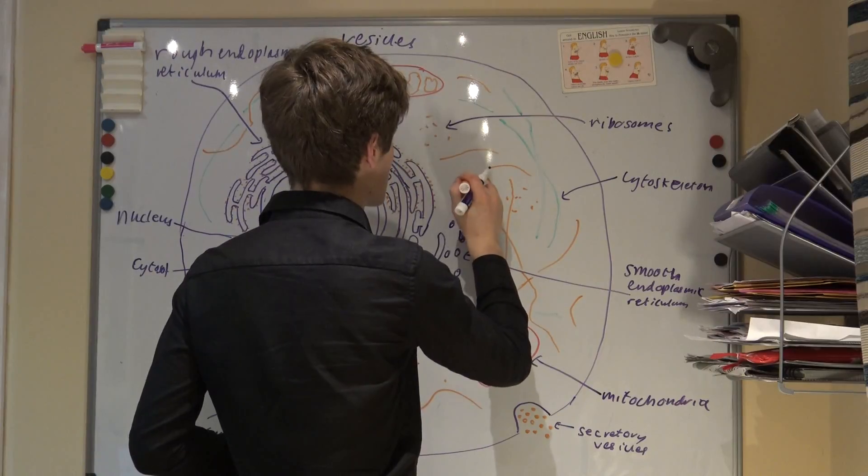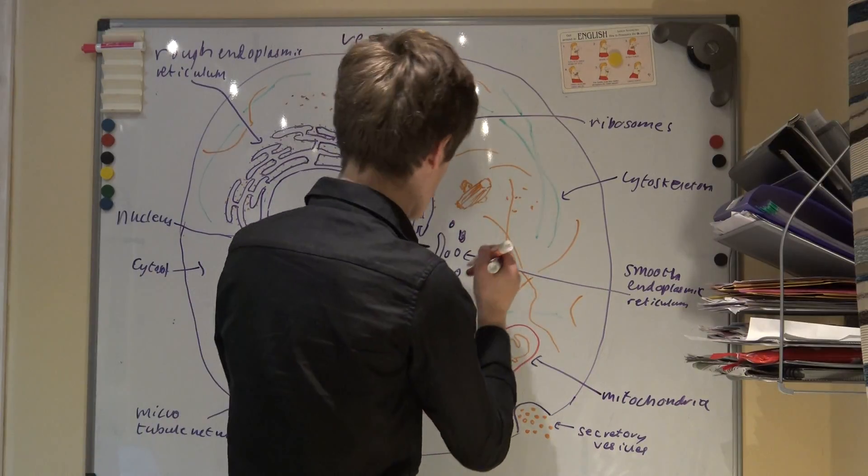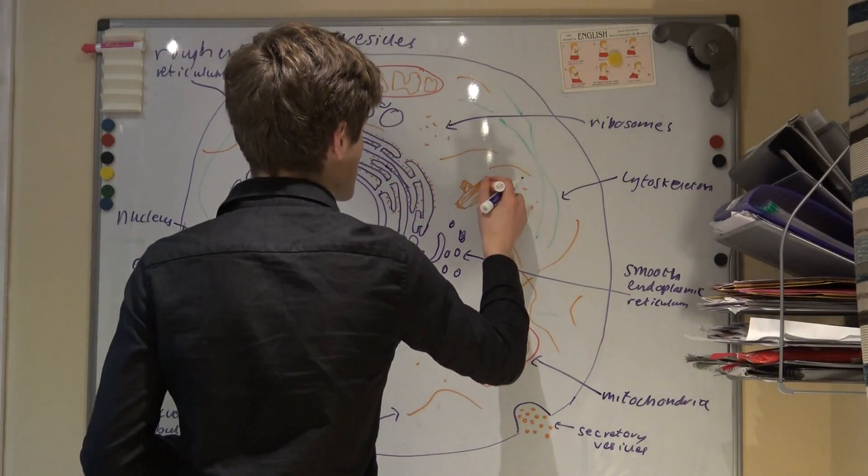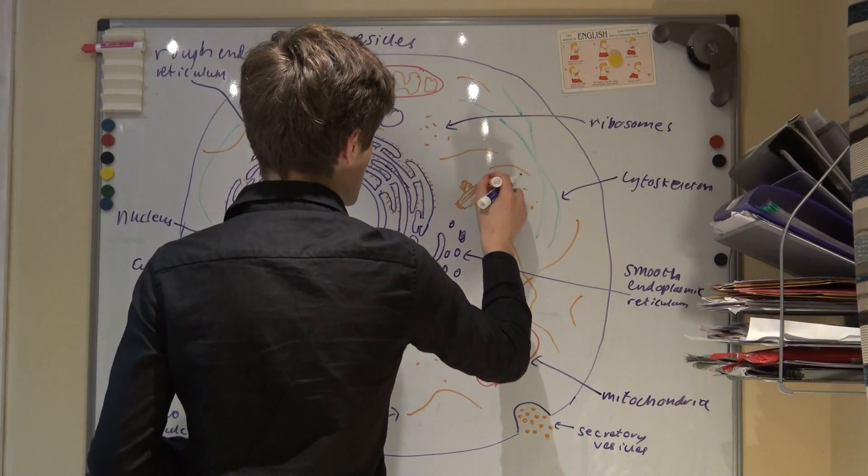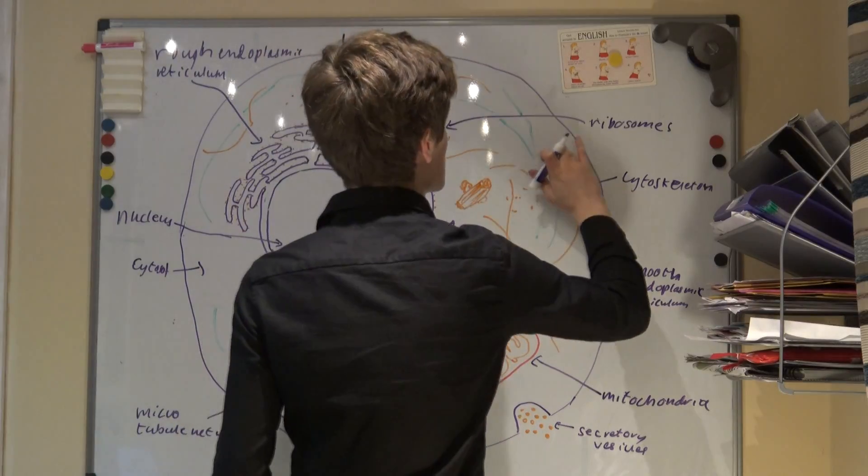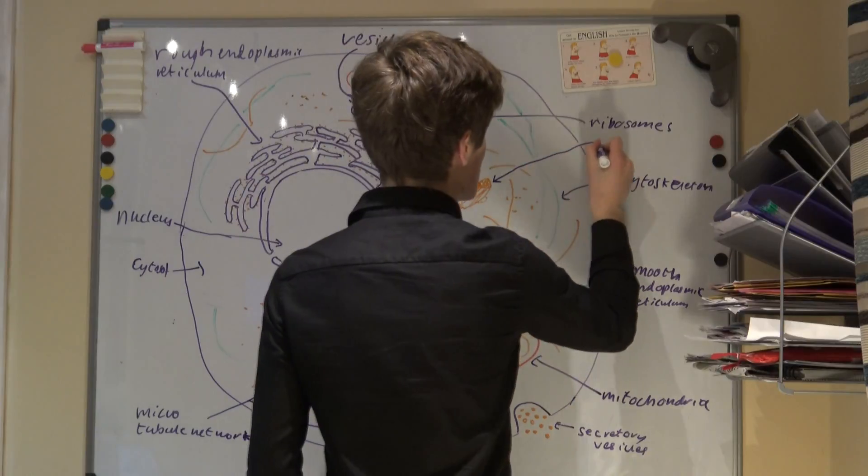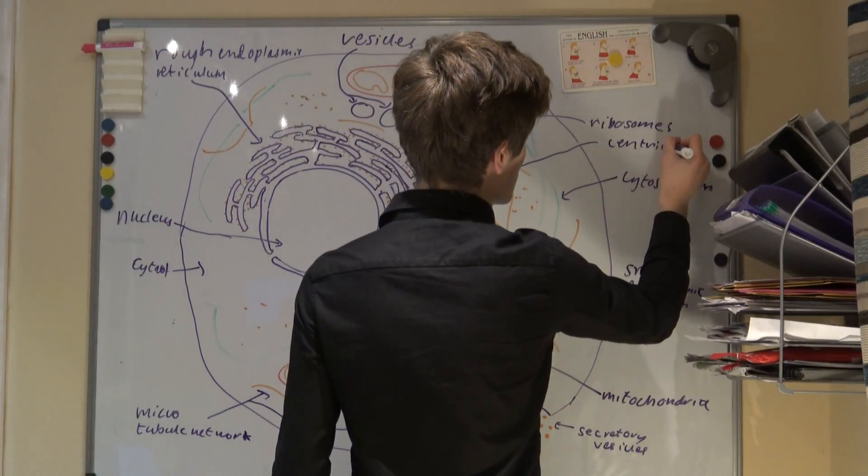These are present in most eukaryotic cells, with the exception of flowering plants and most fungi. They are composed of microtubules. Two centrioles form the centrosome, which is involved with the assembly and organization of spindle fibers during cell division. Centrioles are also thought to have a role in the positioning of flagella and cilia.